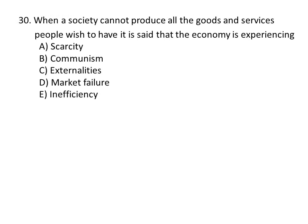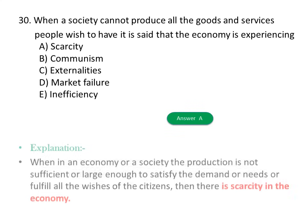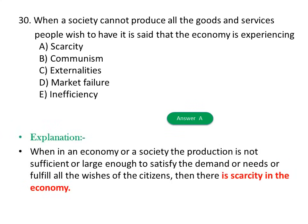Question thirty: When a society cannot produce all the goods and services people wish to have, it is said that the economy is experiencing: A) Scarcity, B) Communism, C) Externalities, D) Market failure, E) Inefficiency. The answer is A, scarcity — when production is not sufficient to satisfy the demand or fulfill all wishes of citizens, there is scarcity in the economy.